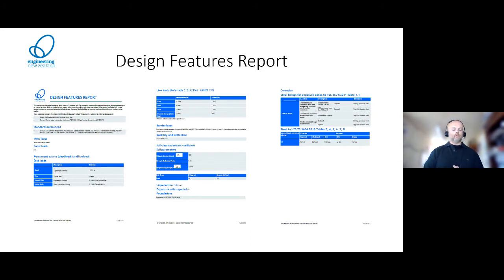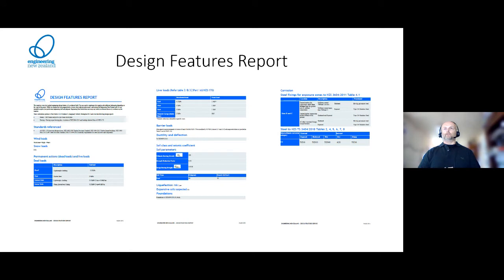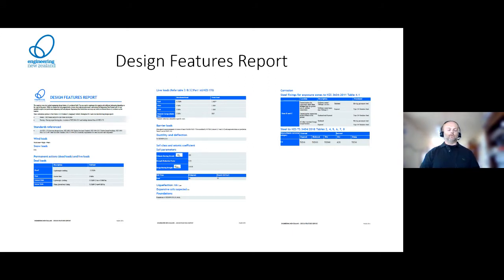Similarly with concrete - the engineer can indicate steel against the ground, and it will say that with 25 MPa concrete you need this amount of cover and protection. All of that information is right there, available in the same place each time so you can easily check it.